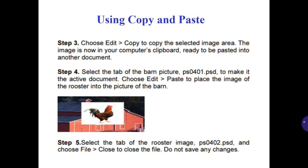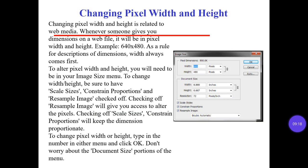Step number 4: select the tab of the barn picture to make it the active document. Choose Edit > Paste to place the image of the rooster into the picture of the barn. You can see this in the picture. Step number 5: select the tab of the rooster image and choose File > Close to close the file. Don't save any changes.